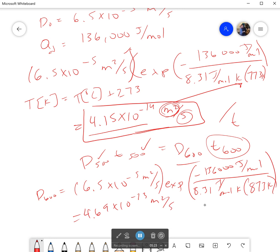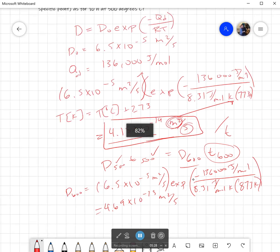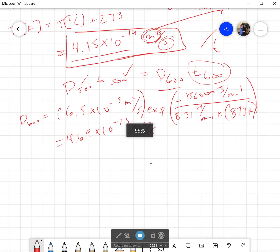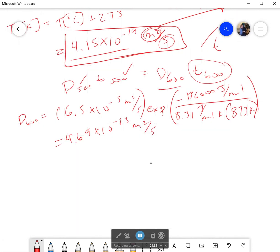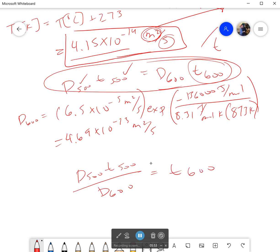But that's not our answer yet. Don't stop there. You still have a little more to go. Just in case you're doing this on paper, don't stop there. Now we're going to go back to this equation we saw earlier for the effect. We're going to solve for our time at 600 degrees Celsius. So I will have D 500 T 500 all over D 600, and that's going to be equal to my time at 600. If I manage to plug this in, what I'll get is 0.88 hours.